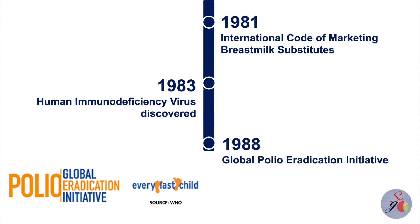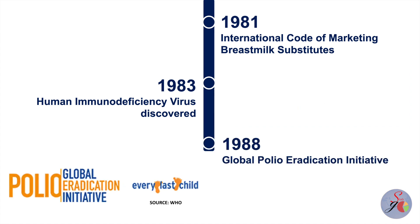The Global Polio Eradication Initiative was launched in 1988. Since then, the incidence of polio has been reduced by more than 99%. In 2022, only two countries remained endemic to wild poliovirus. 20 million cases of polio have been averted and more than 1.5 million childhood deaths were prevented.